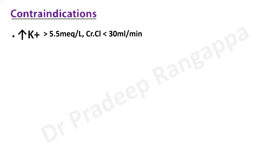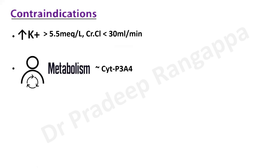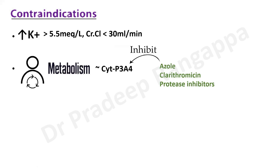Contraindications are similar to spironolactone: hyperkalemia greater than 5.5 mEq/L or creatinine clearance less than 30 ml/min. The metabolism is through cytochrome P450 3A4. Any drugs utilizing this enzyme for metabolism can significantly increase eplerenone levels in the blood. Agents which inhibit CYP3A4 include azole antifungals, clarithromycin, and protease inhibitors. One must be cautious if macrolides, azoles, or protease inhibitors are on board when using eplerenone.